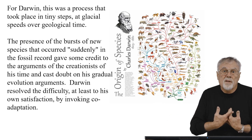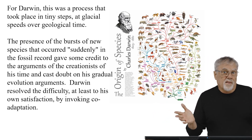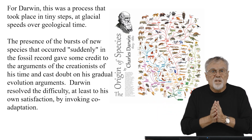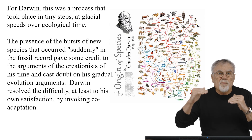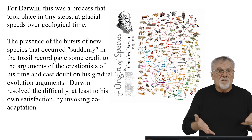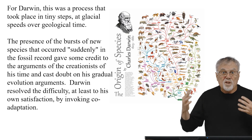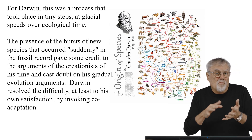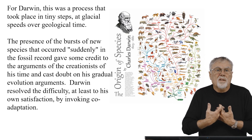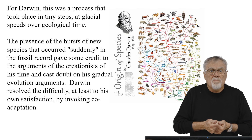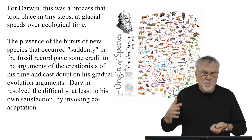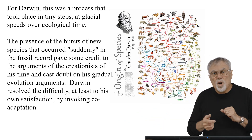This was tricky because Darwin presented the evolutionary process as proceeding at glacial speeds — a very, very slow process taking place in tiny steps over geological time. So the presence of bursts of new species that occurred suddenly in the fossil record, giving rise to all these flowering plants and bees, in some way gave credit to the arguments of the creationists of the time and cast doubt on his gradual evolution arguments. But Darwin resolved the difficulty, at least to his own satisfaction and that of most colleagues, by invoking the concept of co-adaptation.